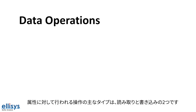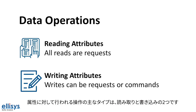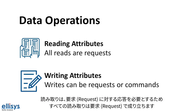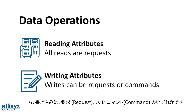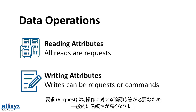The two main types of operations that take place on attributes are reads and writes. Reads are requests by nature since they require a response with the value being requested. Writes, on the other hand, can either be requests or commands. Requests are generally more reliable since they require a response that acknowledges the write operation.